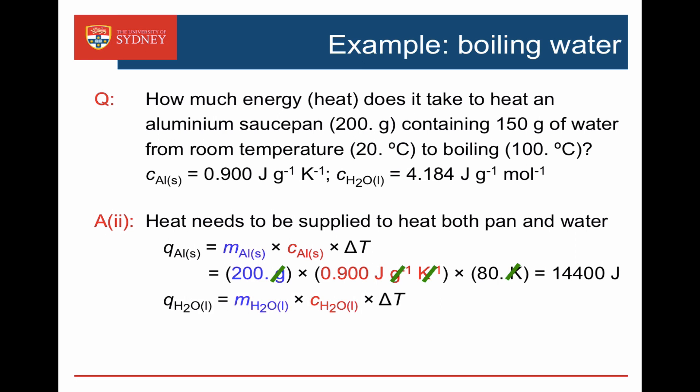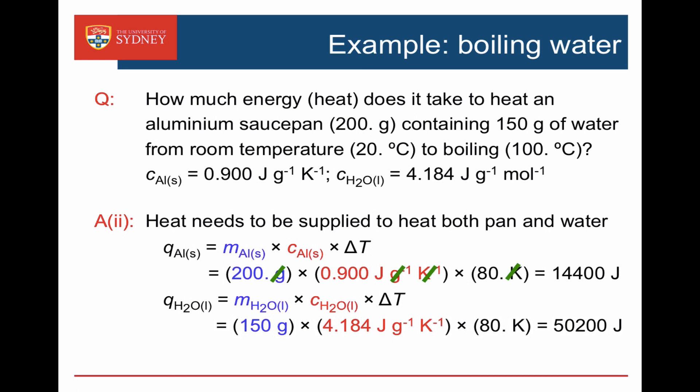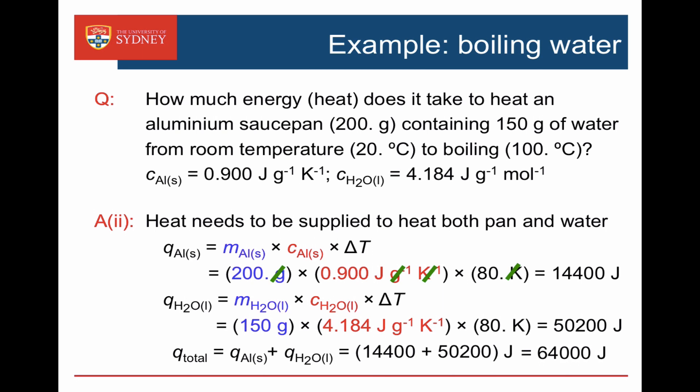For the water: 150 grams multiplied by 4.184 joules per gram per Kelvin multiplied by 80 Kelvin gives 50,200 joules. Adding the two results together gives a total of 64,000 joules.